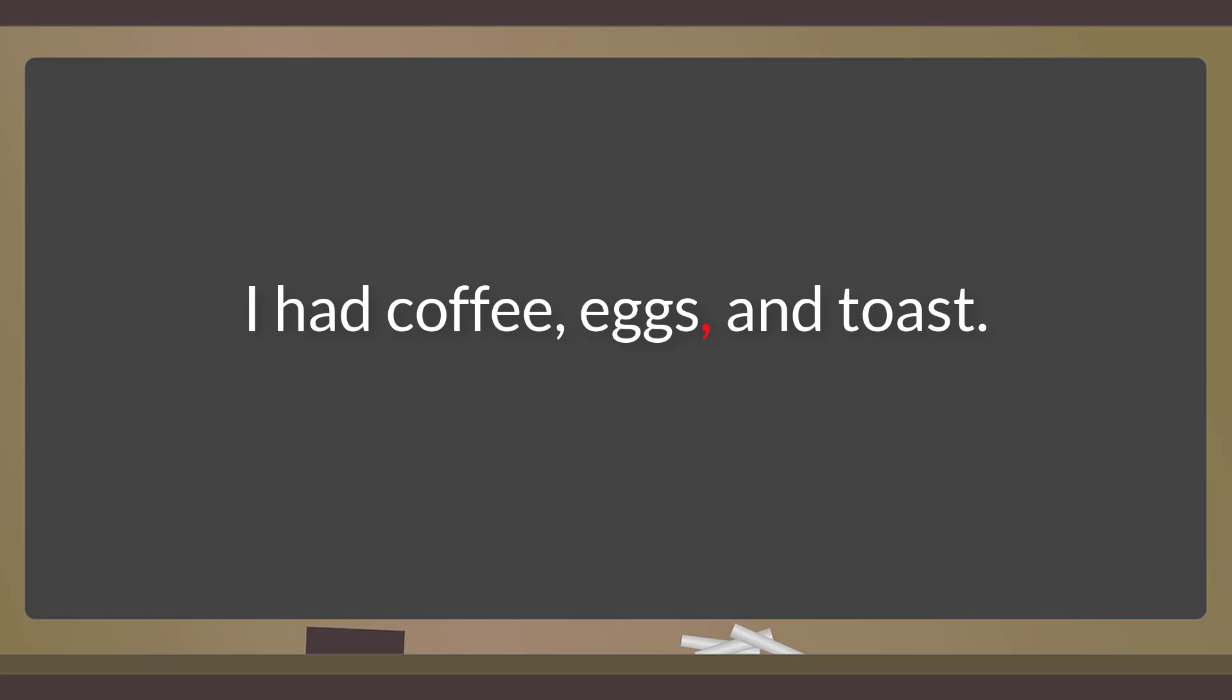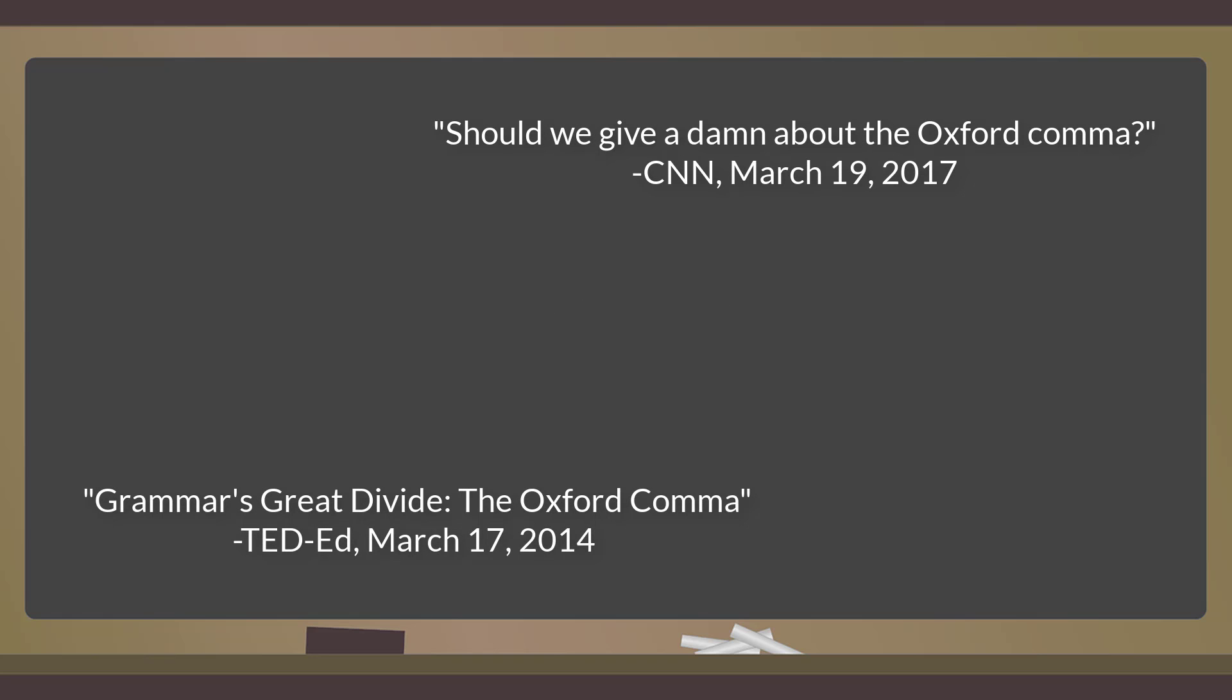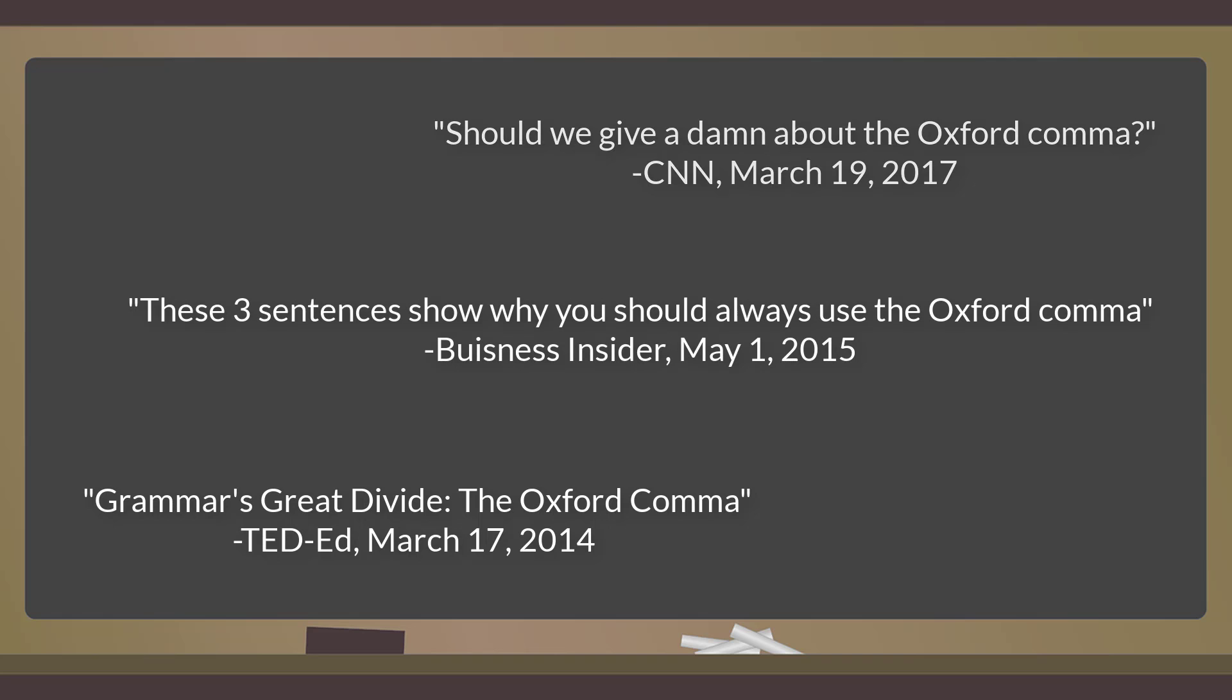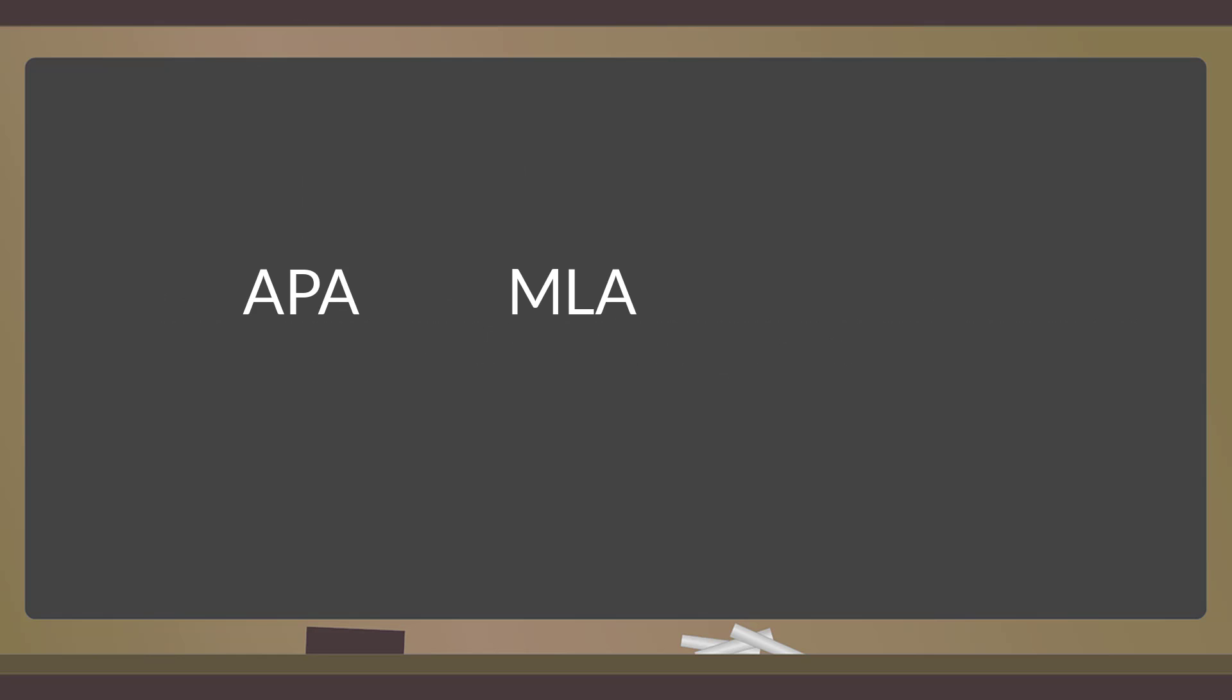The Oxford comma is often talked about as being a stylistic preference, something a writer needs to decide to either use or avoid. However, this debate is somewhat misleading, as many major citation styles like APA, MLA, and Turabian specifically call for its use.